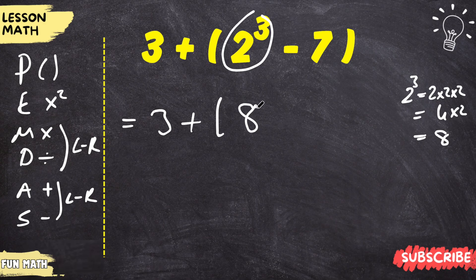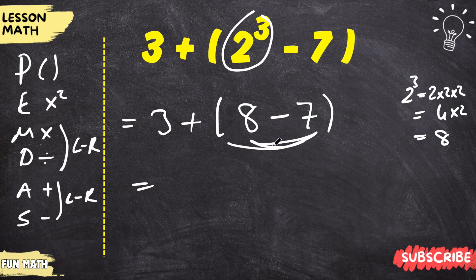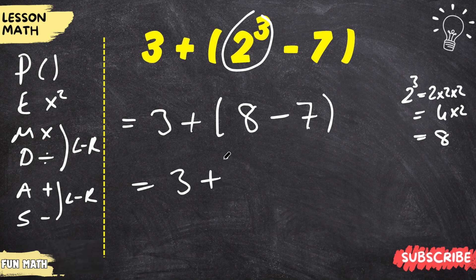Let's substitute. Now, let's subtract within the parentheses. 8 minus 7 equals 1.